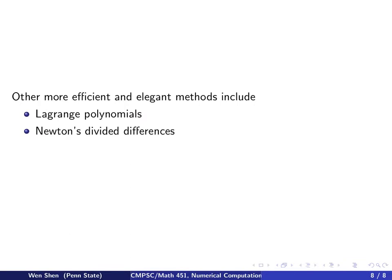So Vandermonde matrix method is very intuitive and very straightforward, and probably not the most efficient or elegant method to handle the situation of interpolating points with polynomials. So in this chapter later, we'll study two more other methods. One is called Lagrange polynomial, and the other one is Newton's divided difference. These are somewhat more advanced methods and better designed to suit the goal.